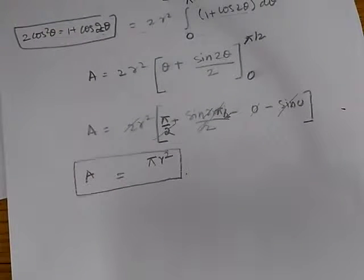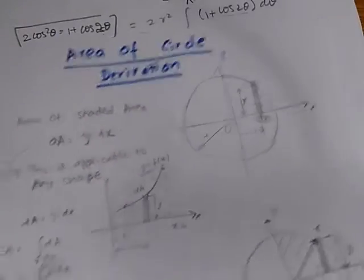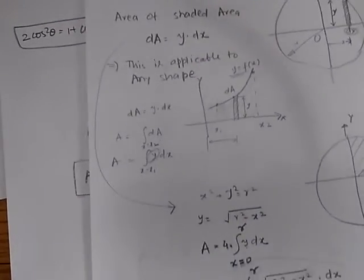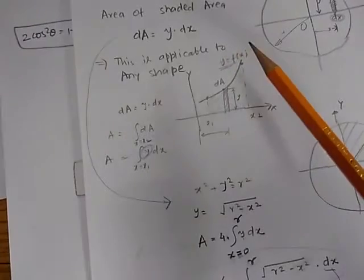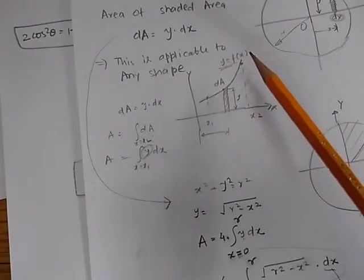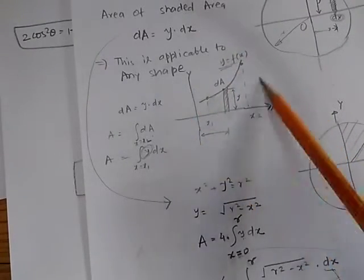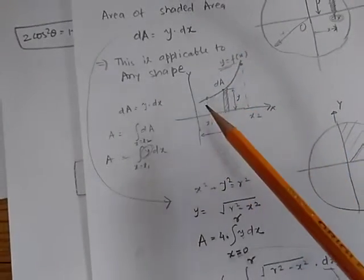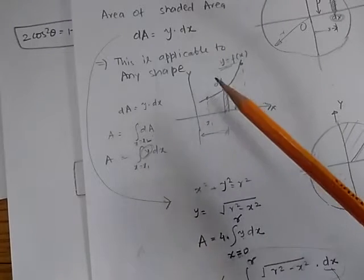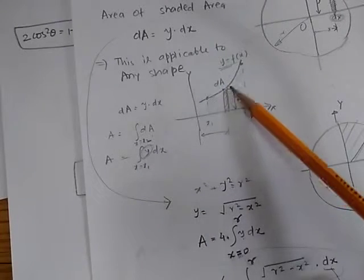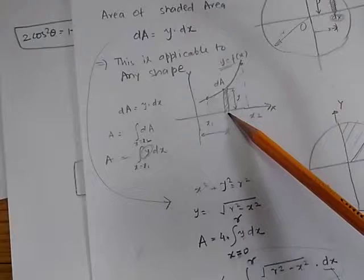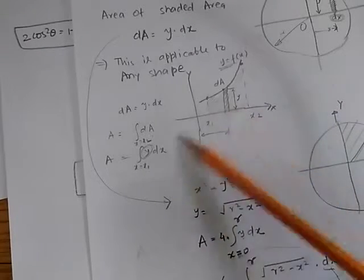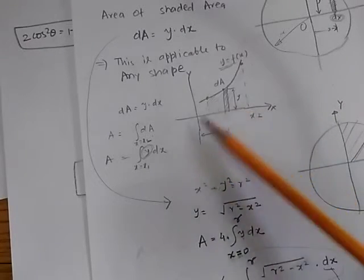While this problem has been shown for a circle, in general you can use this same approach for any general curve. The key steps are: find the area of a very small portion, express y in terms of x, and then integrate over the required range. You can use this formula for an ellipse or any other generic curve.